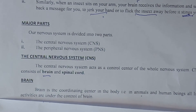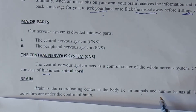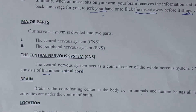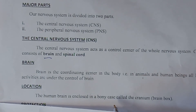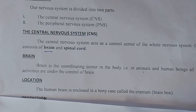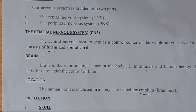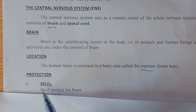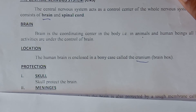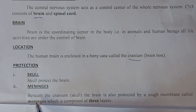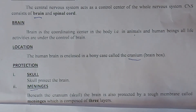The brain is the coordinating center of the body. In animals and humans, all life activities are under the control of the brain. The human brain is enclosed in a bony cage called the cranium or brain box. The skull protects the brain. The special cavity enclosing the brain is called the cranium.